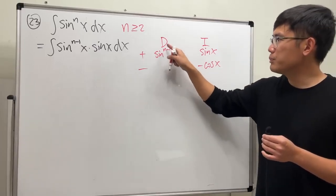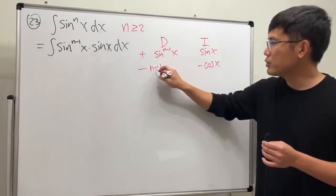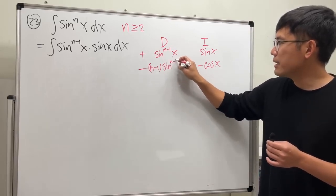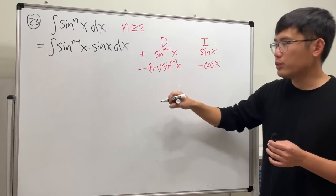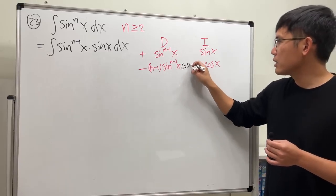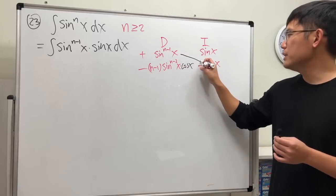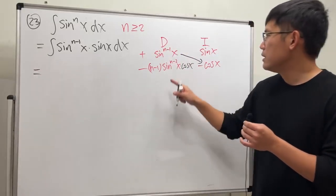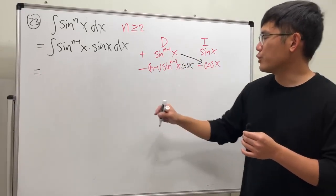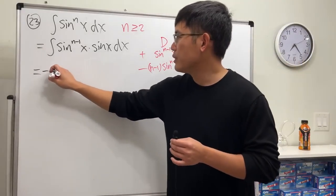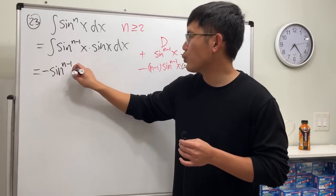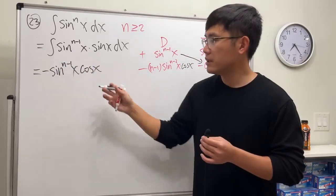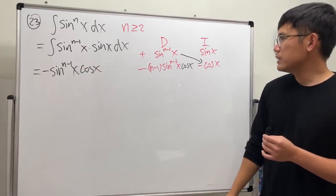When we differentiate sine to the n minus one, we put the n minus one to the front and subtract one from the power — giving sine to the n minus two — and then by the chain rule we multiply by cosine x. Putting it together, we get negative sine to the n minus one times cosine.